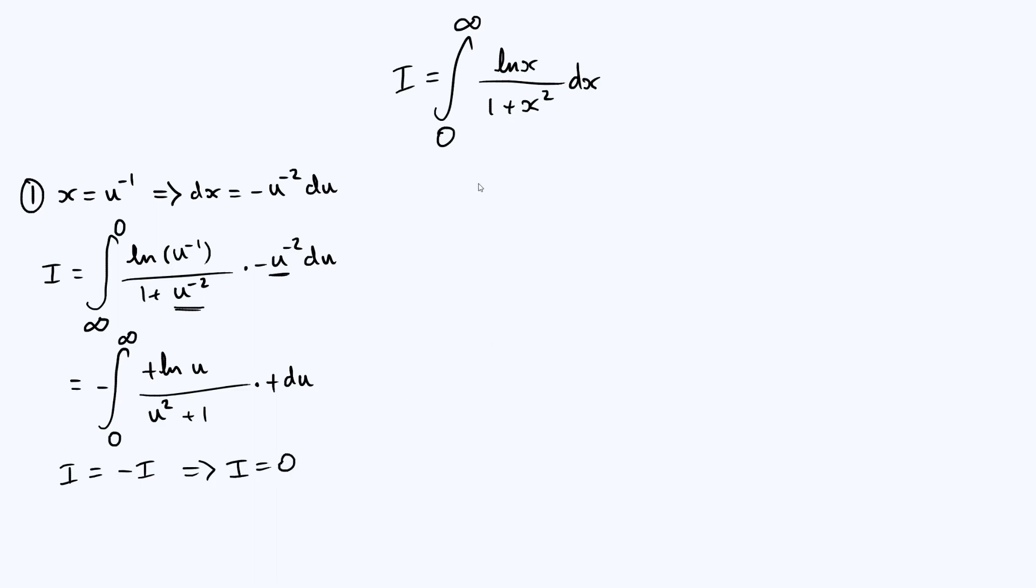So that's one way to do it, and there's actually another substitution that we can use. Let's have a look at what that is. What we can do is set x to be e to the v. So I'm using v instead of u to show that this is a different variable. Now, if we differentiate both sides of this, we get dx is e to the v dv. So let's do our substitution.